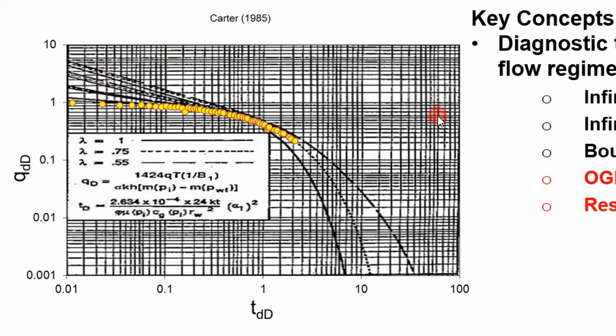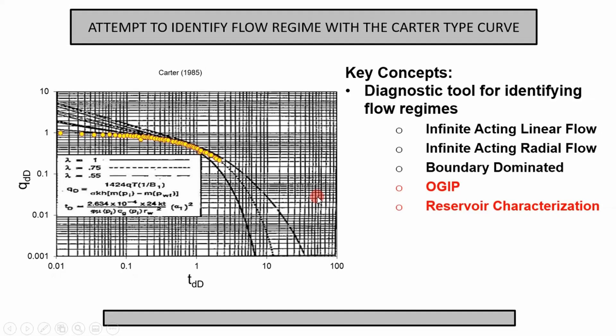The key points I want you to think about as we go through this analysis is that the Carter type curve for our purpose is a diagnostic tool for identifying the flow regimes. What flow regimes are we talking about? Infinite acting linear flow, which is essentially equivalent to a hydraulically fractured well, infinite acting radial flow, and boundary dominated flow. You can also get original gas in place and reservoir characterization parameters from a Carter type curve, but we've already done that. So we're going to just use this as a diagnostic tool. It's real quick and easy to do and it also validates your model.